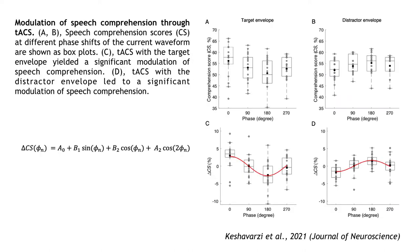We determined the modulation of speech comprehension through TACS by shifting the current waveforms by four different phases. We found that TACS with the target envelope resulted in a significant modulation of speech comprehension, such that the highest comprehension score is observed at a zero phase shift and the lowest at a phase shift of about 180 degrees.